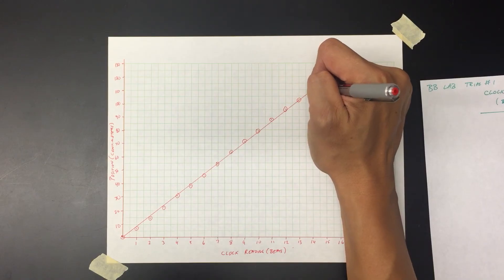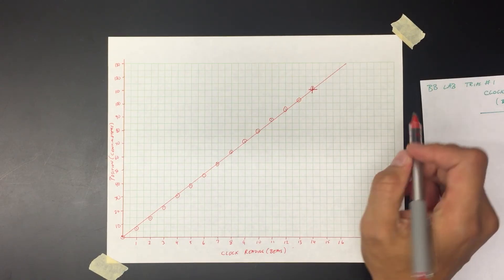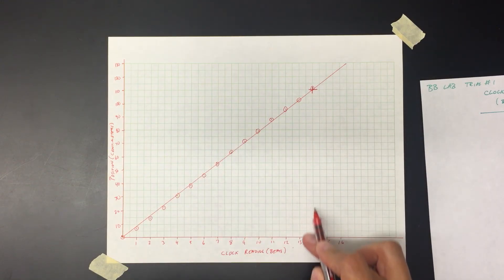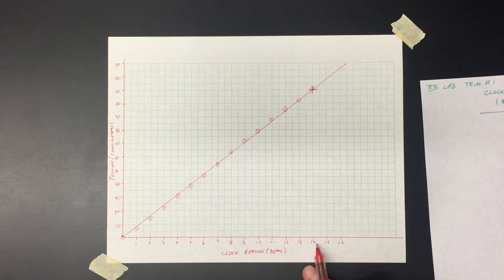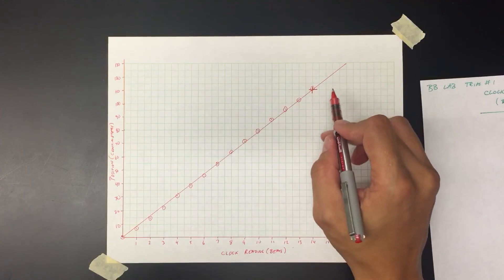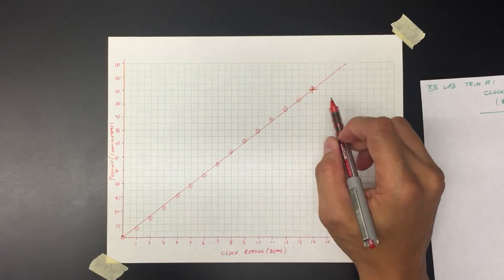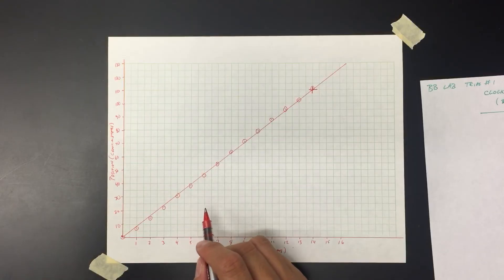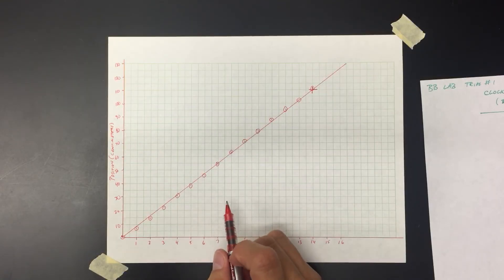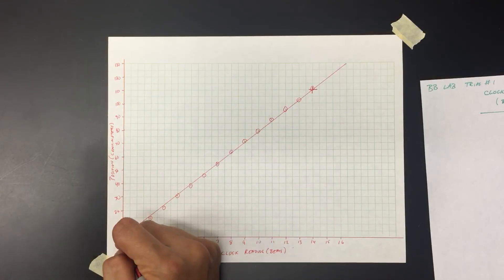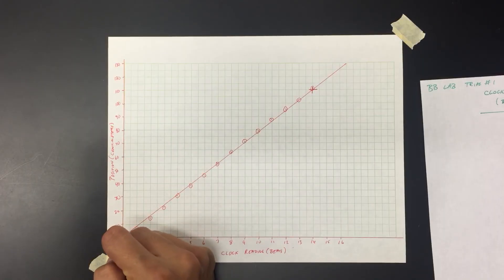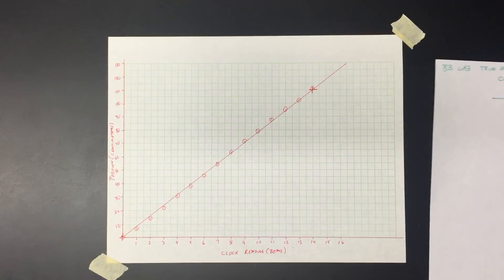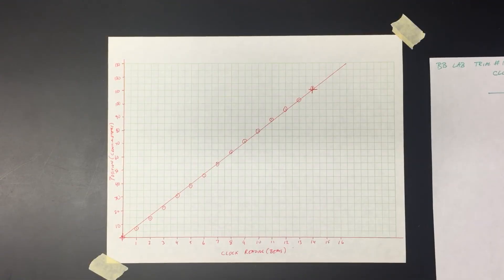If I mark that grid intersection with a little plus sign, you can see this one goes right across to 110 on the y-axis and down to 14 on the x-axis. I'll find a second easy point — I'm going to go ahead and use zero. Zero is my point, and that's what I'll use for my slope calculation.